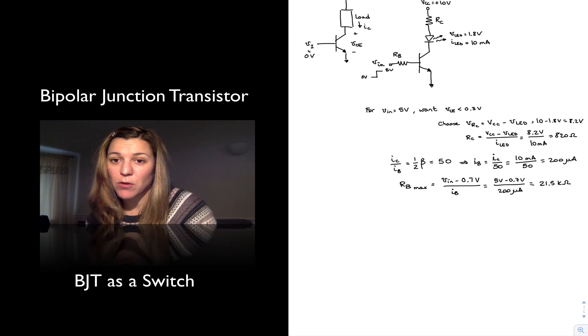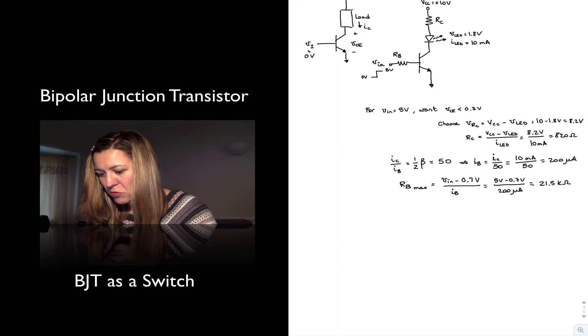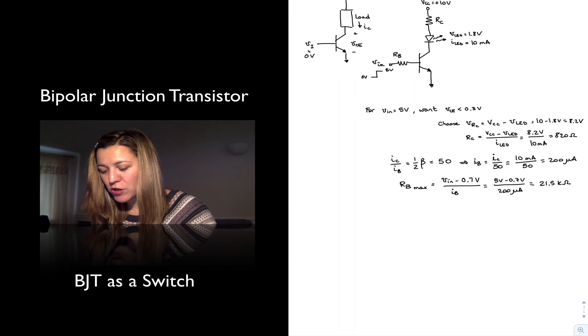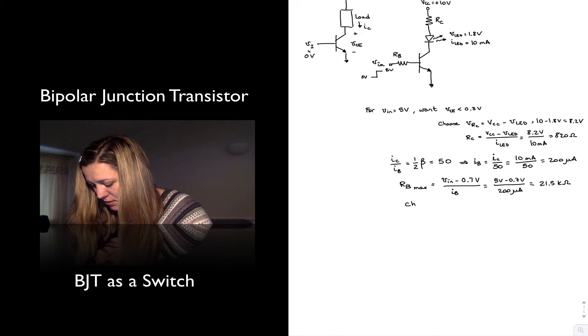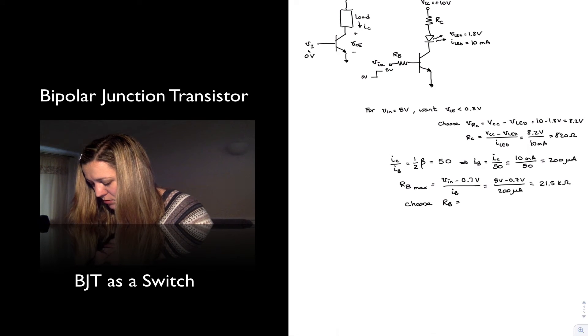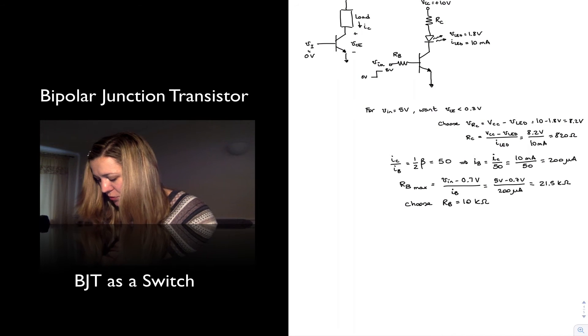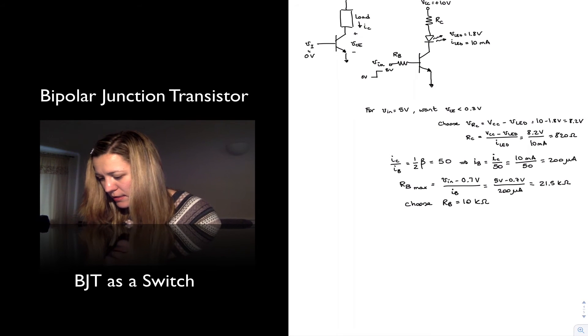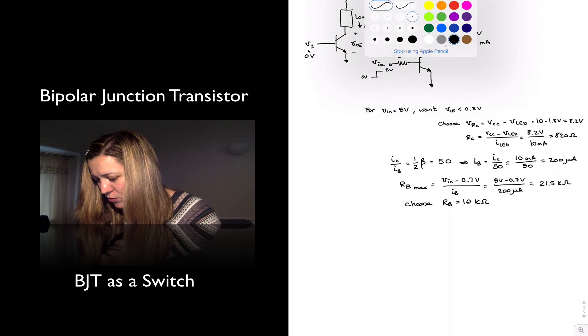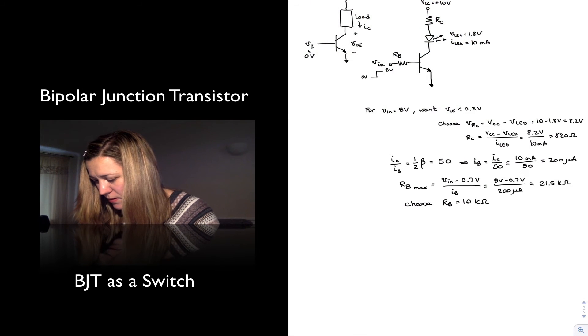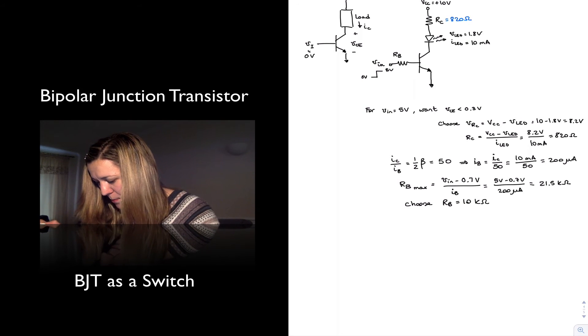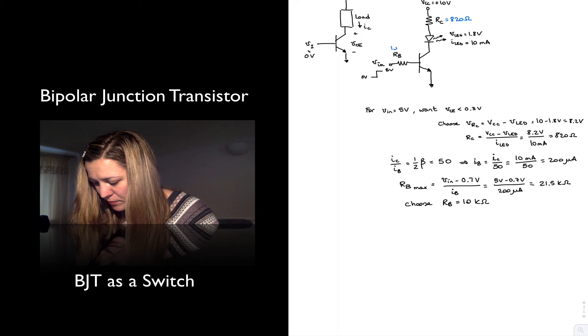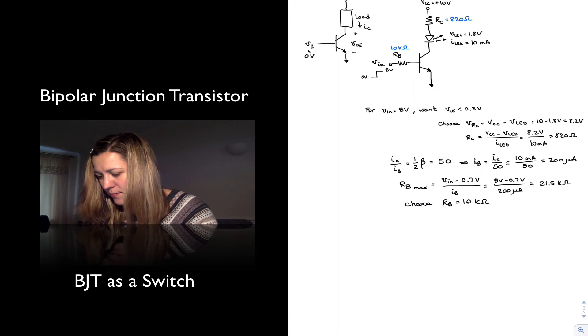Obviously, I can go lower than that, and that will just make things better, because it will increase the value of my base current. And so I'm going to choose, for sake of example, 10 kiloohms. That's below the maximum value I just calculated. So choose RB equals 10 kiloohms. And that's it. Now I can input those results into my circuit. I will have my RC, I calculated it as 820 ohms. My RB is equal to 10 kiloohms. And I have my switch.